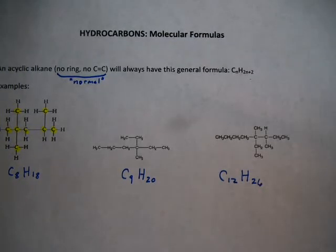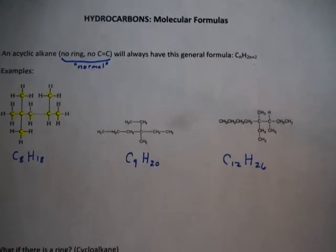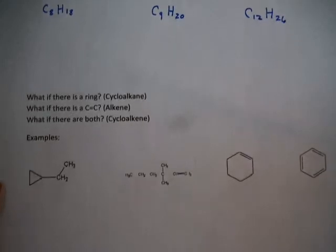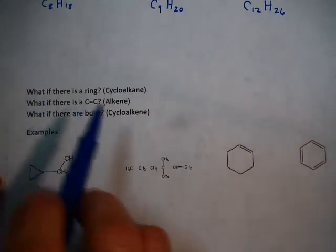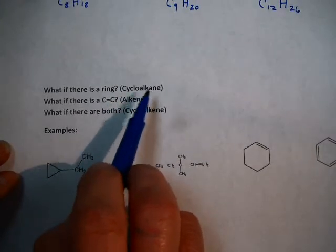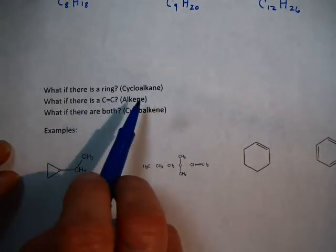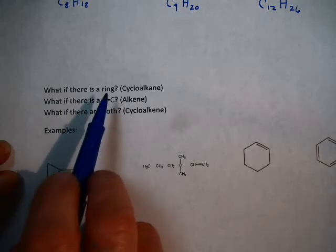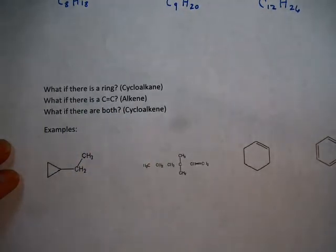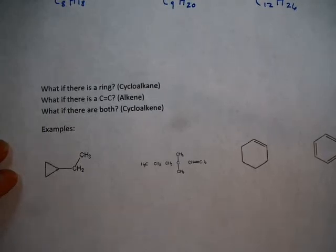Now what happens if you do have a ring or you do have a double bond? Let's see how that changes things. What if there is a ring? What if there is a double bond? If there's a ring, we call that a cycloalkane. If there's a double bond, we call that an alkene. And of course, if you have a ring and a double bond, then that's a cycloalkene. How does that change things? Let's look at each one.